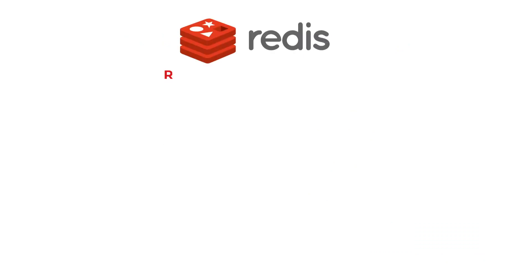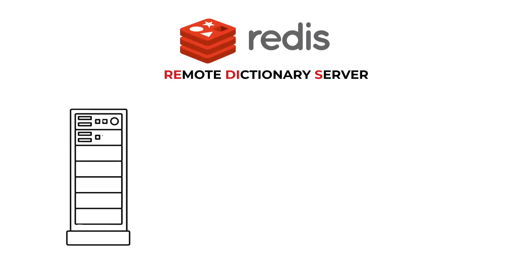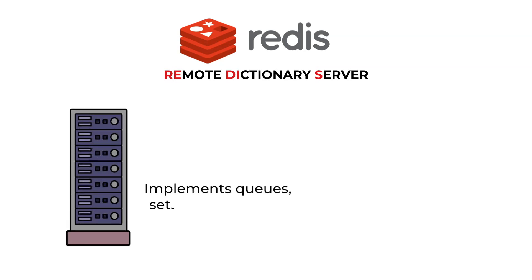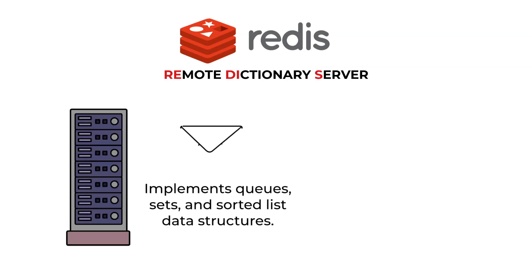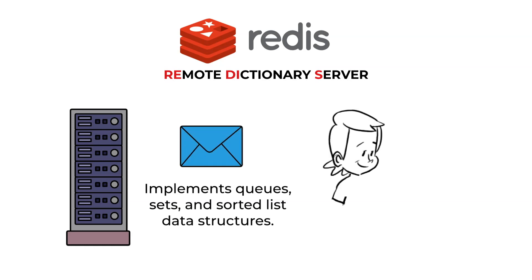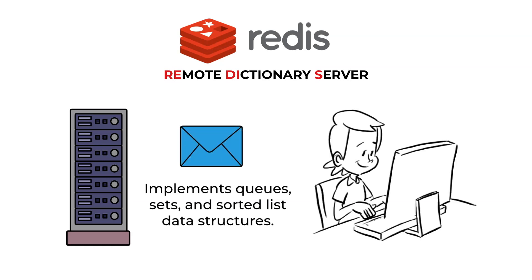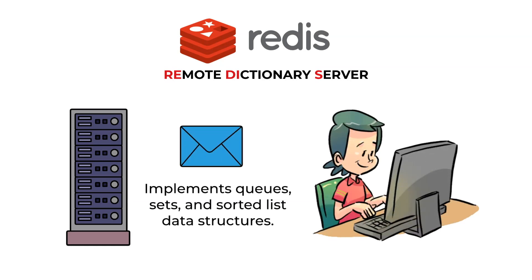Redis — Remote Dictionary Server — is an open-source, memory-resident key-value store that implements queues, sets, and sorted list data structures. It also offers several message delivery mechanisms and supports dynamic programming and map-reduce operations.